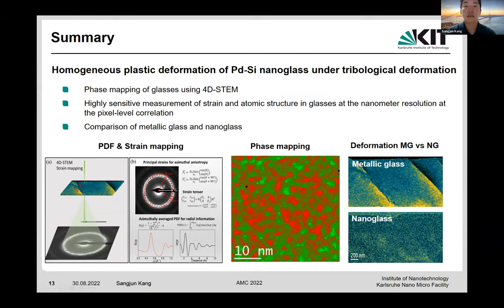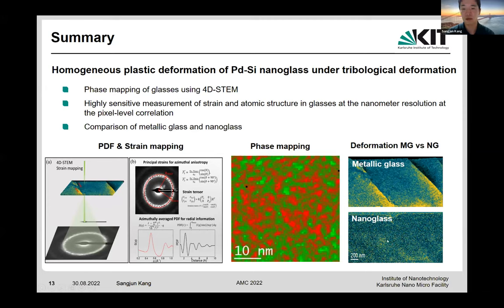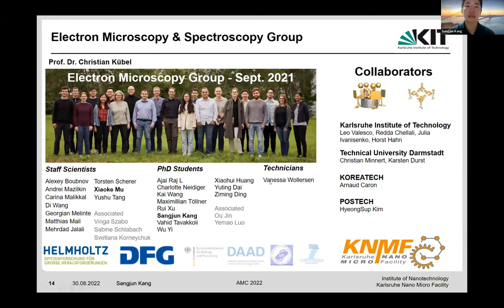In summary, today I talked about the experimental observation of homogeneous plastic deformation of palladium silicon nanoglass under tribological deformation. We developed a method for phase mapping of nanoglass using 4D-STEM, which provides highly sensitive measurement of strain and local atomic structure in glasses at nanometer-level resolution. Comparing palladium silicon metallic glass and palladium silicon nanoglass, the results show homogeneous deformation behavior for nanoglass, while metallic glass shows localized inhomogeneous deformation in the form of shear bands. Our method is expected to initiate broad research possibilities for answering open questions in nanoglasses. Thank you very much for your attention, and I look forward to your questions.